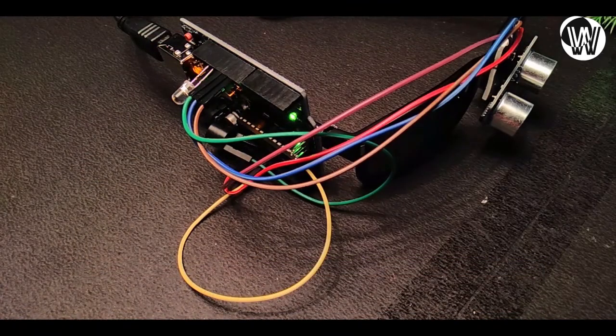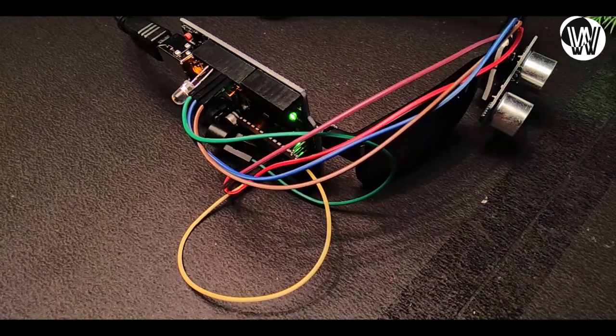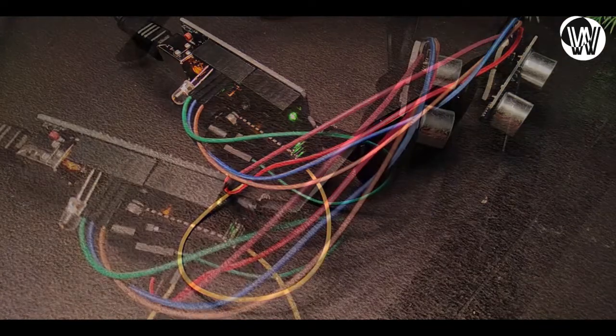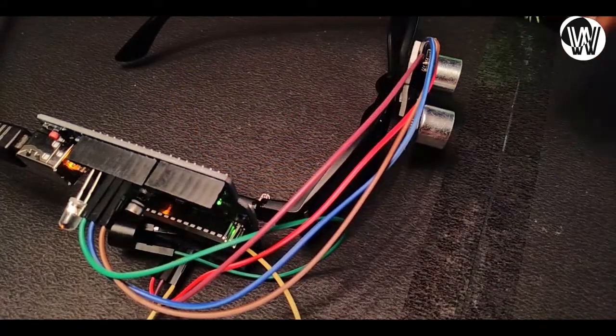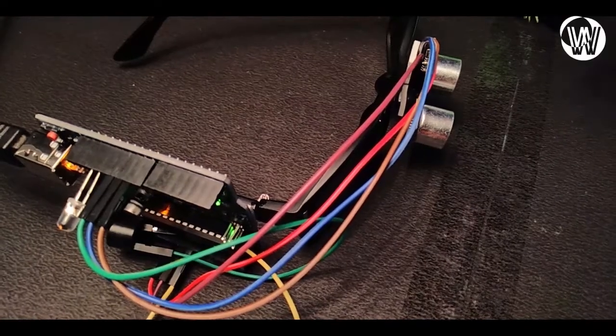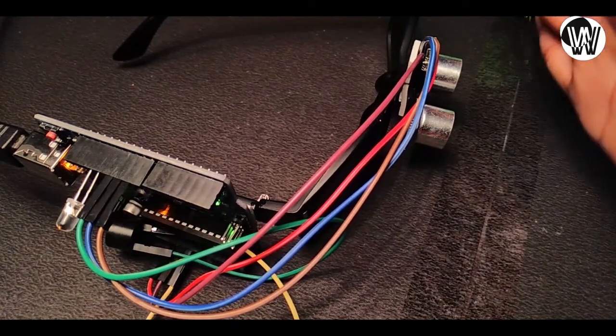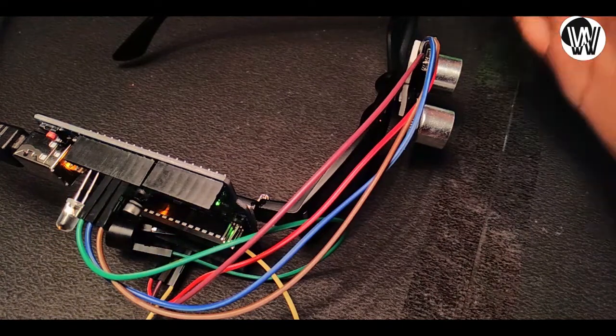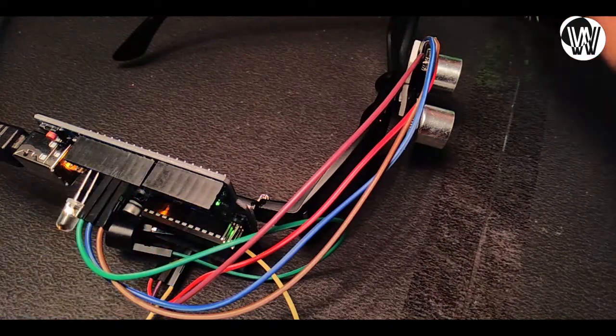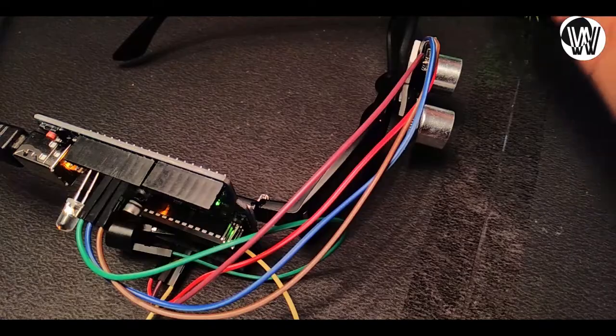Now the code is uploaded to the Arduino and we can check it. When an obstacle is in front of the spectacles, the buzzer beeps and the LED blinks.